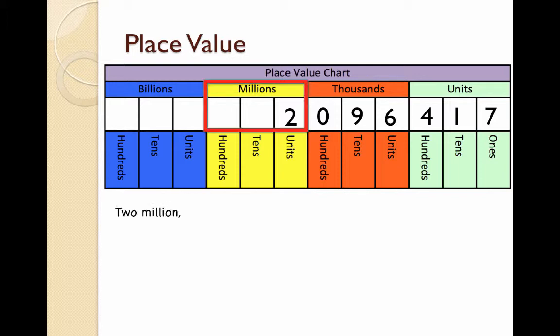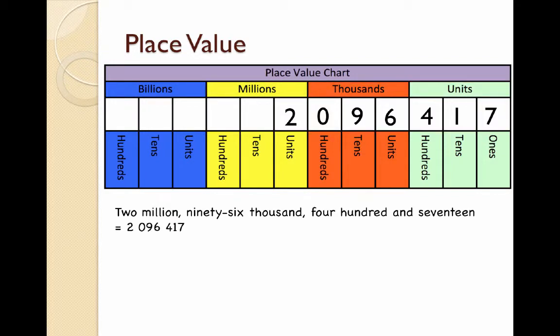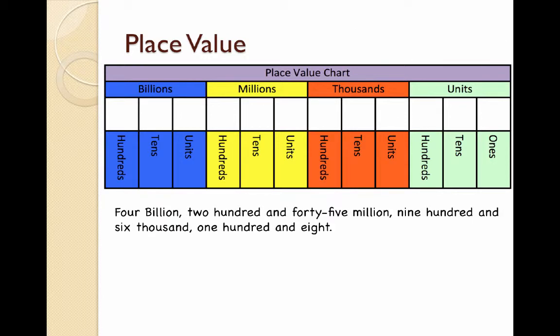This is 2,096,417. To write this as a number, it would be 2,096,417, with my spaces between the millions and the thousands. Summarize by writing out this particular example. You don't necessarily have to write out another place value chart for it.